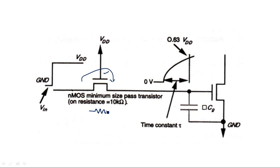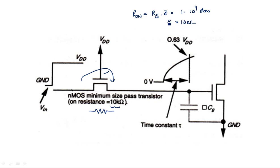The pass transistor has an on-resistance calculated as 10 kilo-ohms, because R_on equals RS into Z, where Z is 1. For an N-channel transistor in 5 micrometer technology, RS is taken as 10^4 ohm per square — the square cancels — giving 10 kilo-ohms. Internally, there is also a gate-to-ground capacitance, which is the standard unit of capacitance CG. Drawing the equivalent circuit gives a resistor in series with a capacitor.